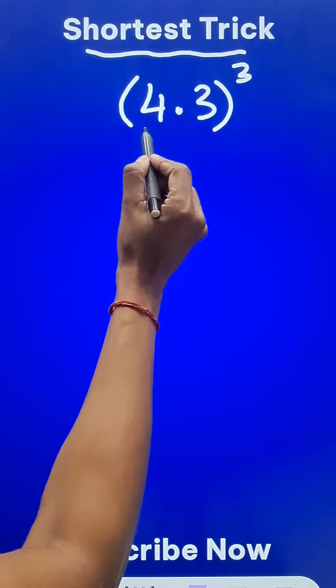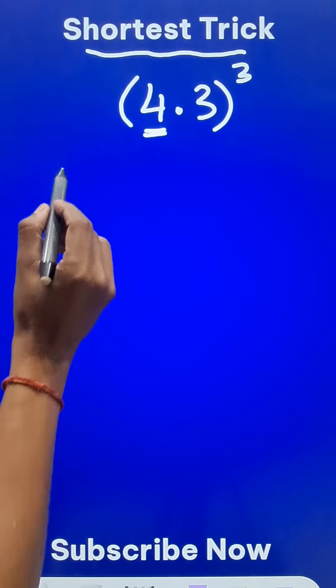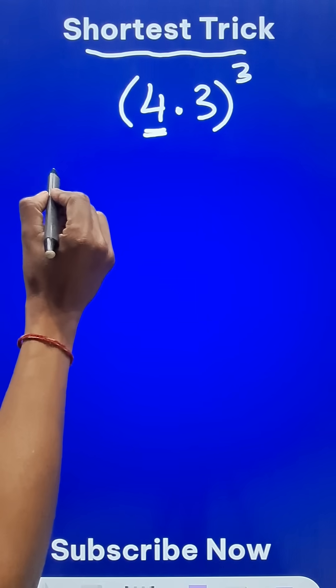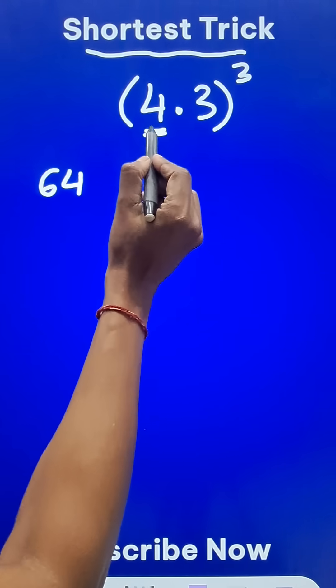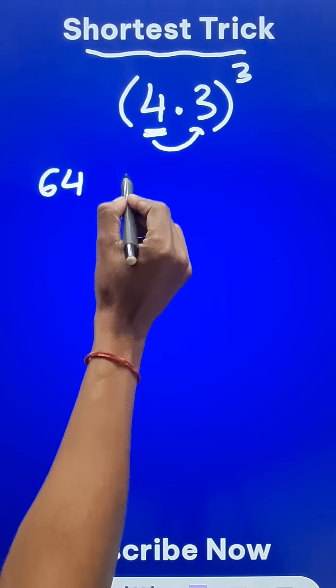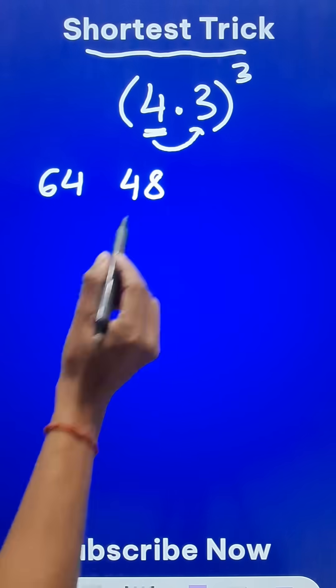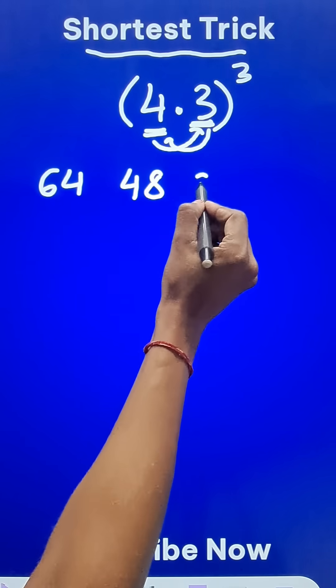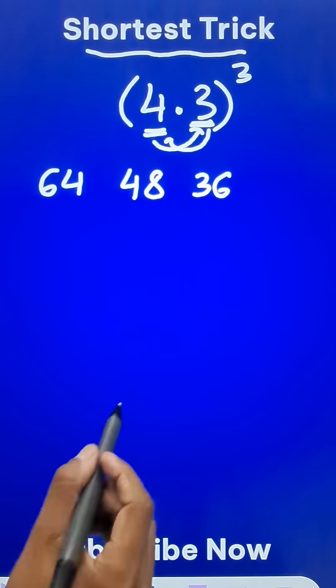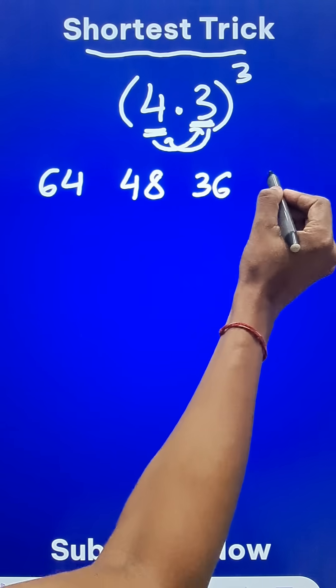The first thing we're going to do is cube 4. 4 cube is 64, so I'm going to write 64 here. Then 4 squared is 16 multiplied by 3 is 48, so I'll write 48. Then 3 squared is 9 multiplied by 4 is 36, which I'll write as the third number. And finally, 3 cube is 27.